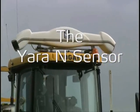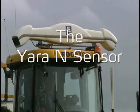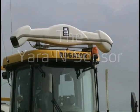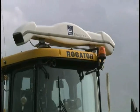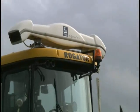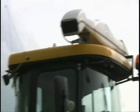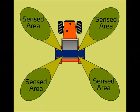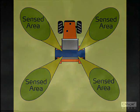Sensors are positioned at four angles, two each side of the tractor, sensing a total area of approximately 50 metres square over the bout width. A fifth sensor, positioned skywards, measures the intensity of ambient light, allowing the sensor to compensate for different levels of cloud cover or sunlight.